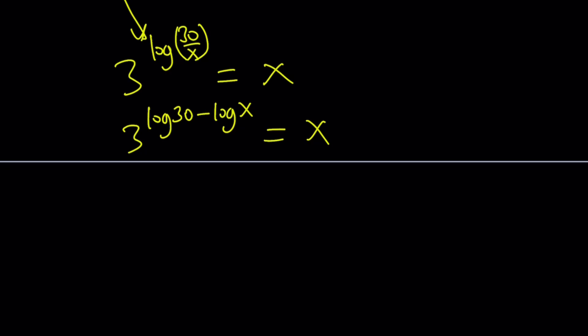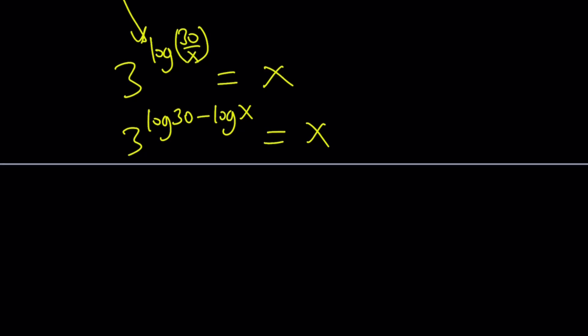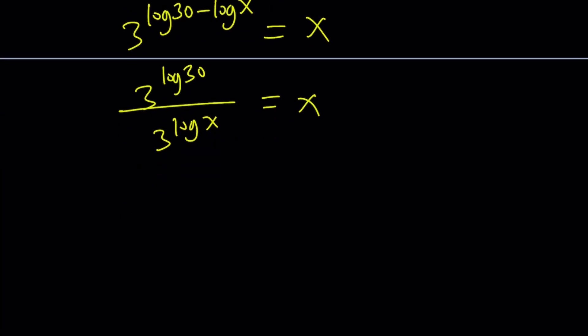So, 3 to the power log 30 divided by 3 to the power log x because that's when you subtract the exponents. So, kind of turn that into a quotient and then multiply both sides by 3 to the power log x. So, kind of like cross-multiply, I'm going to write it as x times 3 to the power log x. And here's the most critical and the most beautiful part in my opinion.